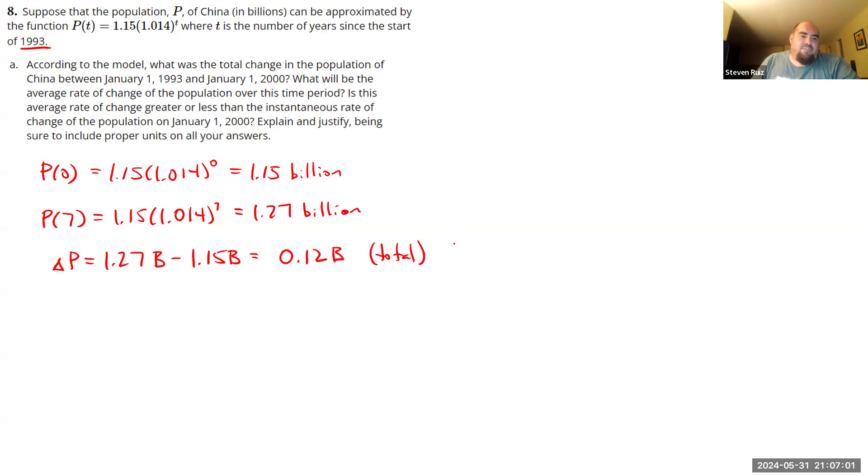Next, they're asking what the average rate of change is. So how do we get the average rate of change? Well, that is going to be the change in population averaged out by the change in time. So 0.12 billion people divided by what is our change in time? Seven years.